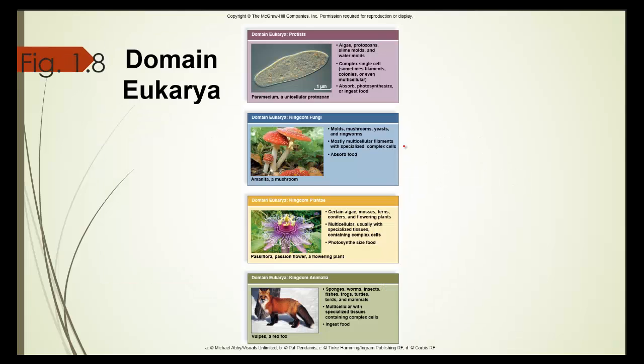And then we have domain eukarya, which is then broken down into four kingdoms. The protus, kingdom fungi, kingdom plantae, and kingdom amelia.